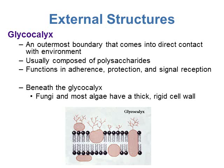Another external structure is the glycocalyx. This is the outermost boundary that comes in direct contact with the environment — it sits outside of the cell membrane. It's composed of polysaccharides, which are complex carbohydrates. The glycocalyx functions in adherence, helping cells stick together or to a surface. It can also function in protection, helping protect the cell from dehydration or other environmental factors, and in signal reception, picking up signals from the environment to help the cell respond.